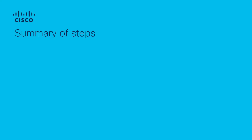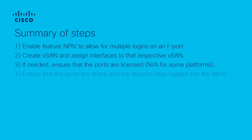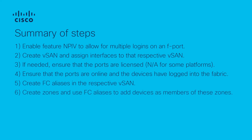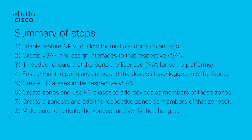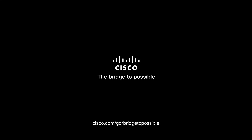To summarize, below are the steps required to perform zoning in basic mode using FC aliases on a brand new single switch fabric. Step 1: Enable feature NPIV to allow for multiple logins on an F-port. Step 2: Create VSAN and assign interfaces to that respective VSAN. Step 3: If needed, ensure that the ports are licensed — not applicable for some platforms. Step 4: Ensure that the ports are online and the devices have logged into the fabric. Step 5: Create FC aliases in the respective VSAN. Step 6: Create zones and use FC aliases to add devices as members of these zones. Step 7: Create a zone set and add the respective zones as members of that zone set. Step 8: Make sure to activate the zone set and verify the changes. Step 9: Once you are satisfied, save your configuration. Step 10: Repeat the same steps for the redundant fabric. I hope this information has been useful for you and thank you for watching.